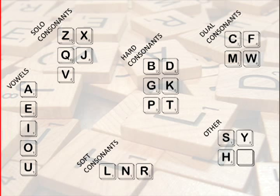This leaves H, which is unique for its main use in digraphs — SH, CH, TH, GH — and S, which is prolifically hard and soft, but also has the ability to change other pairings into soft consonants of their own, such as in sprints.